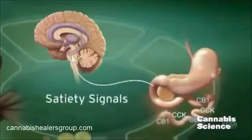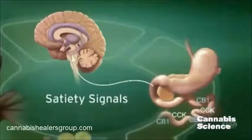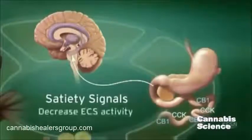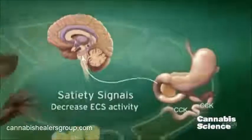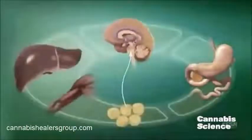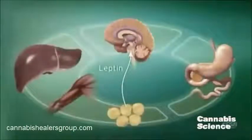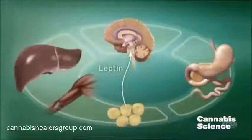Subsequently, ECS activity is decreased through suppression of CB1 expression. An increase in the adiposity hormone leptin decreases endocannabinoid levels in the hypothalamus and decreases food intake.